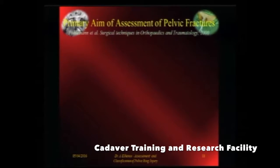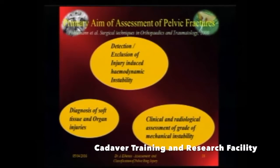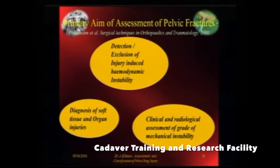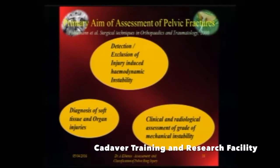What is the primary aim of assessment of a pelvic fracture? You have to detect or exclude injury-induced hemodynamic instability — that is of primary importance and is the biggest killer in an unstable pelvic injury situation. You have to identify clinically and radiologically the level of mechanical instability, and then assess the extent of solid and soft tissue damage. If there is an open wound, mortality in pelvic injury situations increases to about 60%.